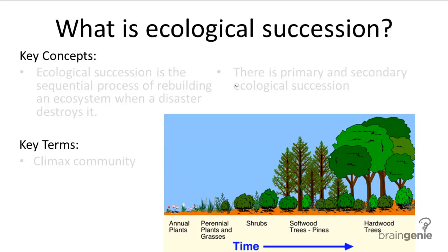Ecosystems are incredibly interconnected. We've already talked a lot about that, and we've talked about how the addition of a new species or a limiting factor can dramatically alter the ecosystem. So then, what happens when an entire area of land is wiped out by a natural disaster — like a volcanic eruption, a hurricane, or a forest fire?